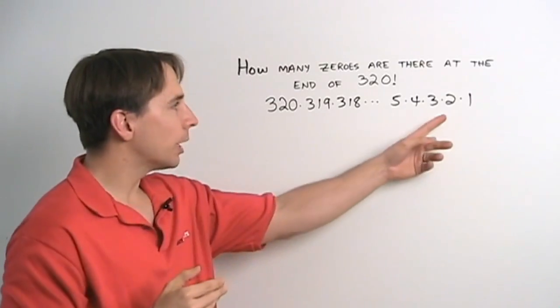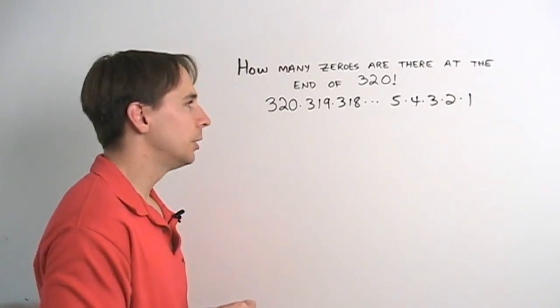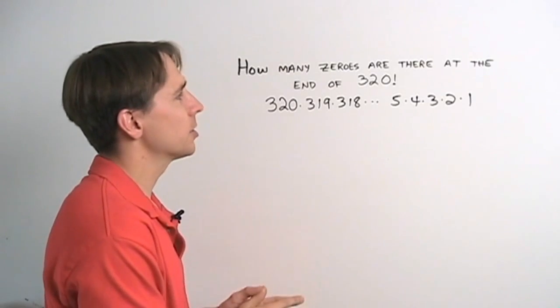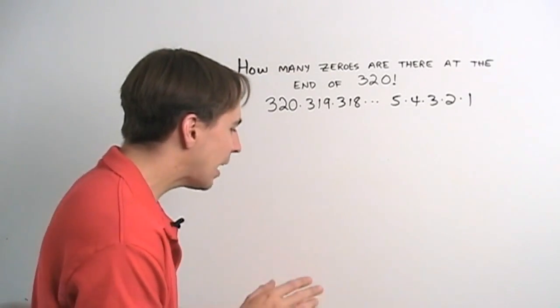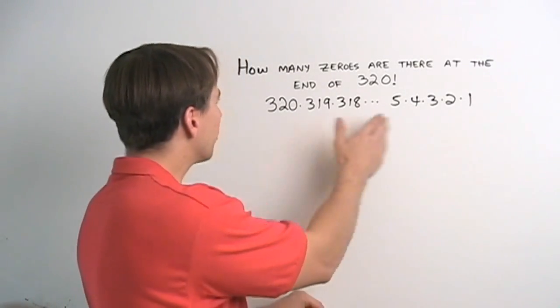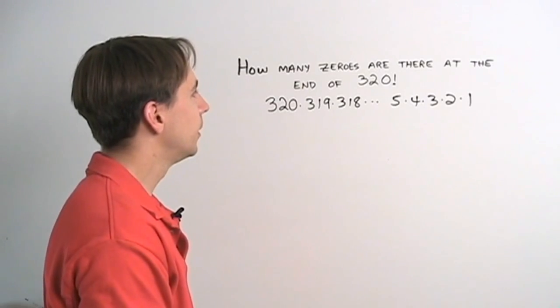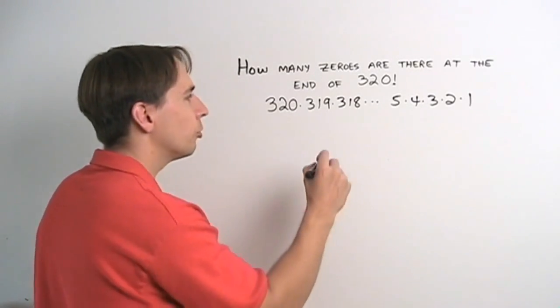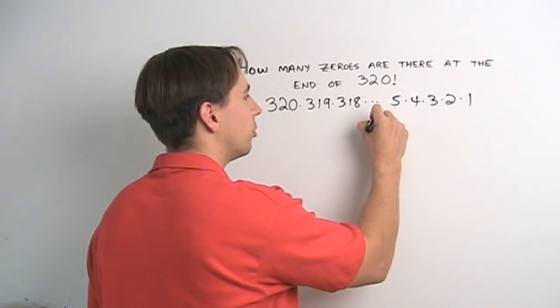Looks like what we need to worry about are the 2's and the 5's. Now there are probably going to be way, way more 2's. So let's just think about the 5's first. And maybe if we can count how many 5's, how many factors of 5 there are here, well, then we can just pair them up with 2's and make 10's. So we'll start by counting up the multiples of 5 in this list.